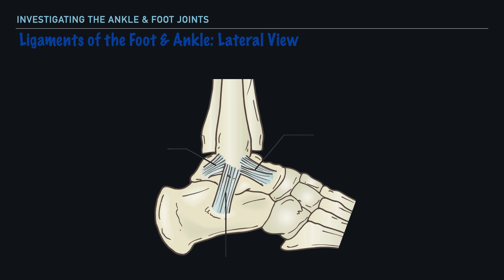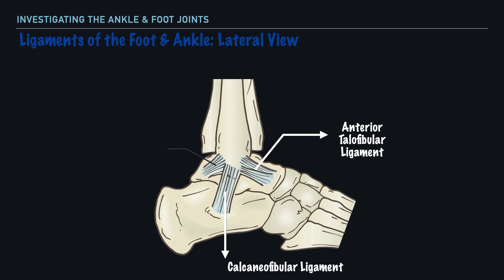Now let's shift our attention to the ligaments and structures that support our bones. While there are a number of ligaments in the foot and ankle, we'll focus on a few. Let's start with the ligaments on the lateral aspect of the foot and ankle — these are likely to be injured if an individual sustains an inversion ankle sprain. The first of these is the anterior talofibular ligament. To help remember the names, we simply need to recall the bony structures of the foot and ankle, because these ligaments inform us of the direction and the names of the bones they connect.